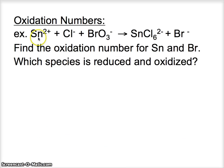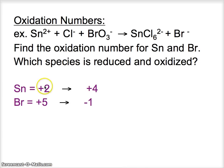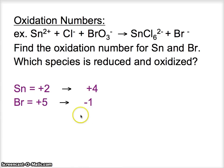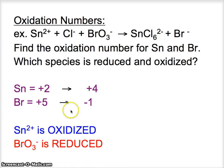Let's do this for another example — we have tin and bromine. Find the oxidation numbers for both before and after. Which one was reduced and which one was oxidized? Tin started with an oxidation number of plus two and went to plus four. Bromine started with plus five and went to minus one. In order to go from plus two to plus four, we had to lose electrons. In order to go from plus five to minus one, we had to gain electrons. So Sn2+ is oxidized and the bromine species is reduced.